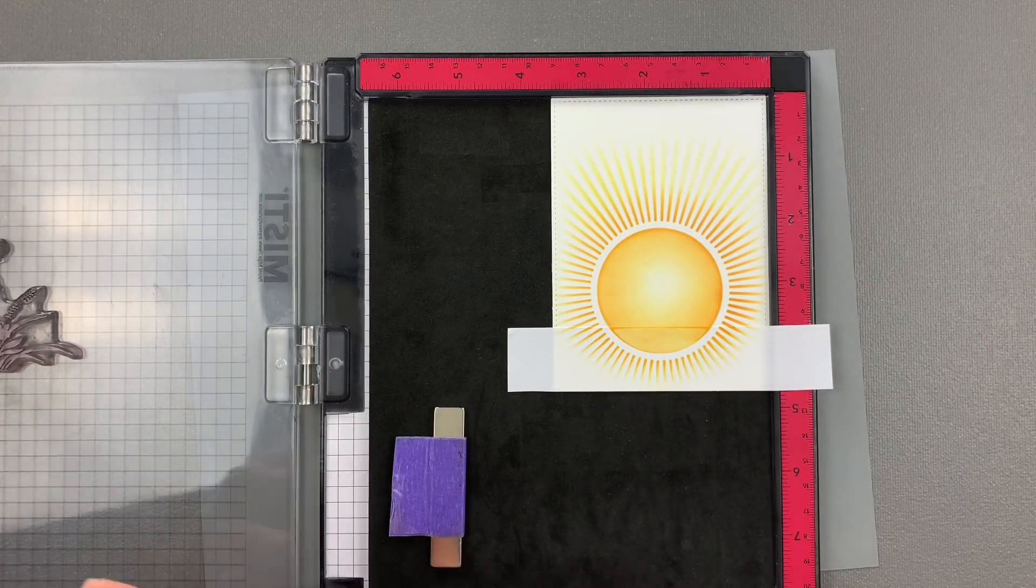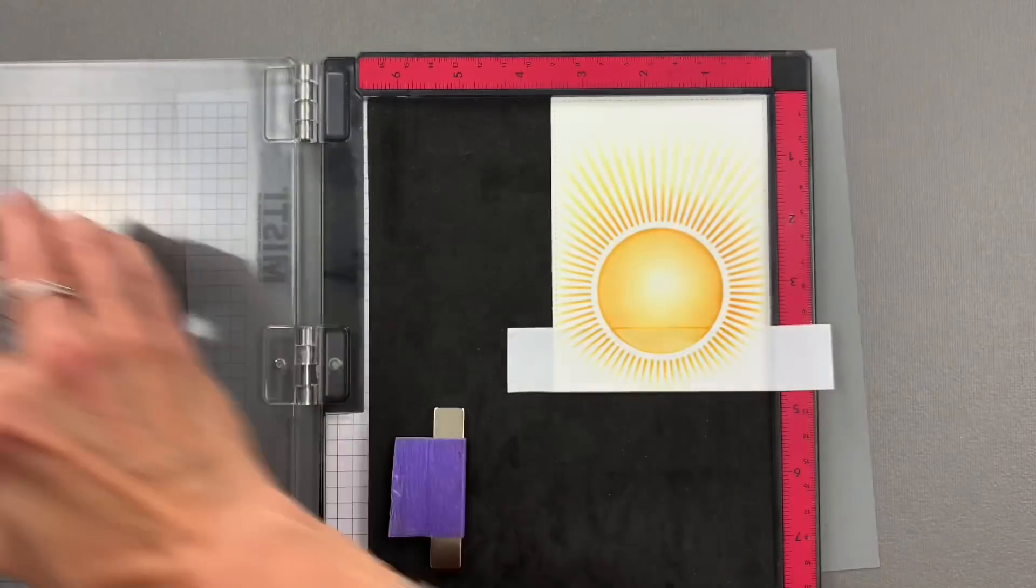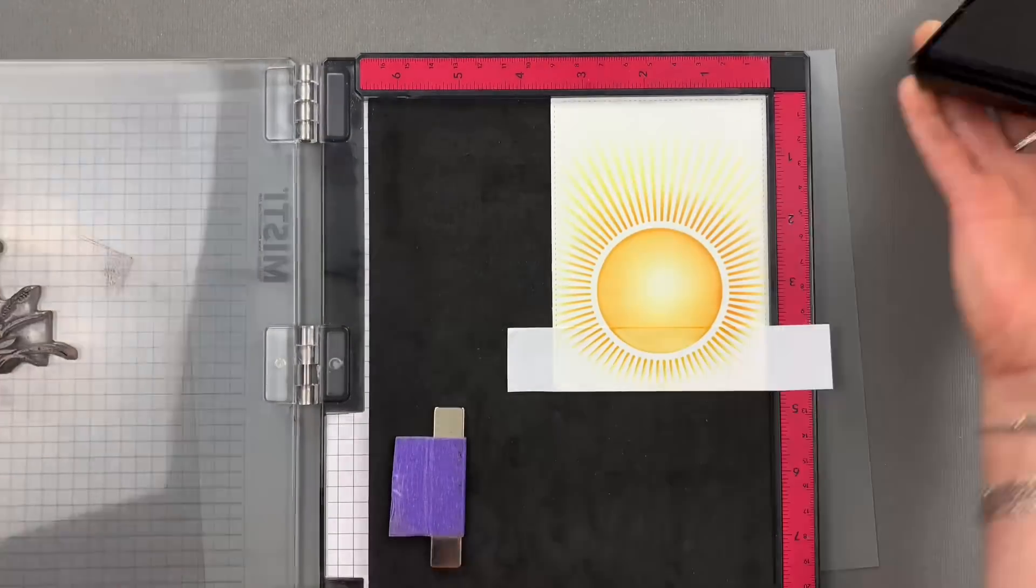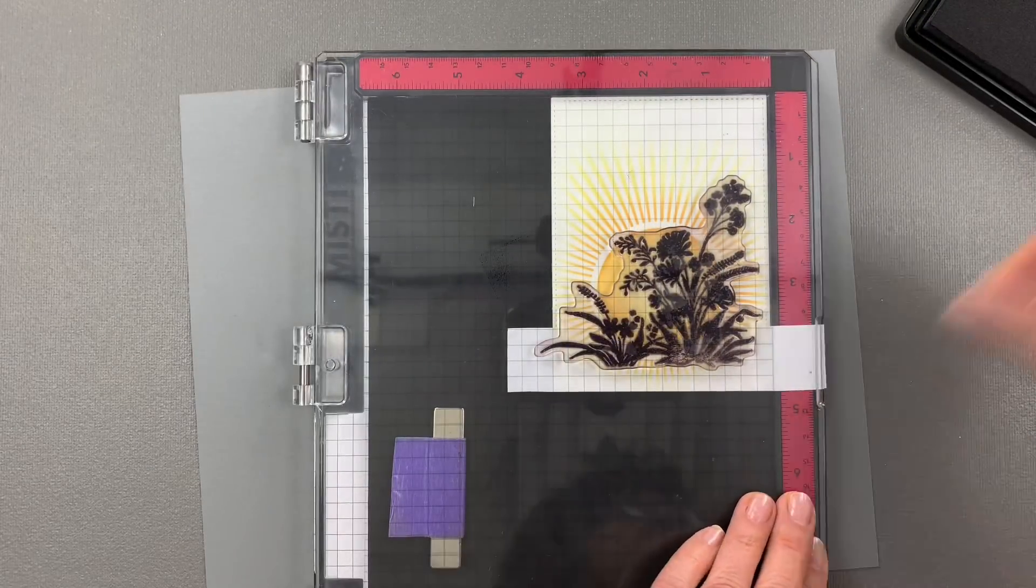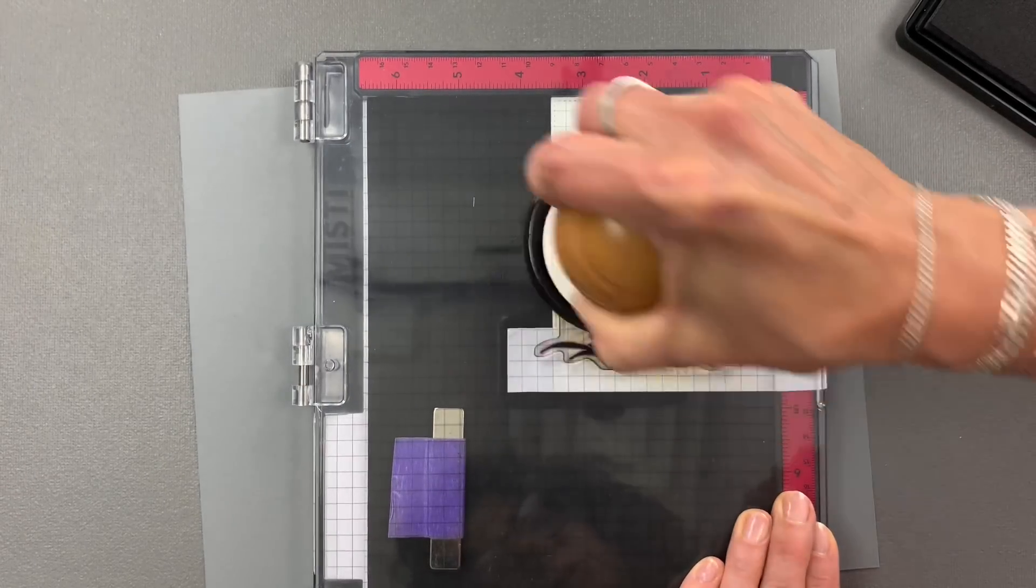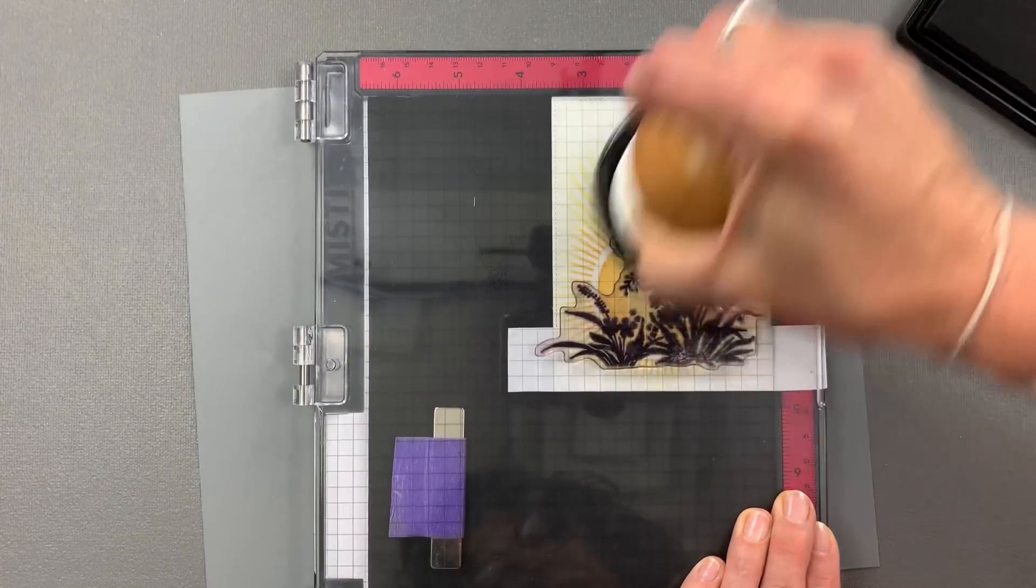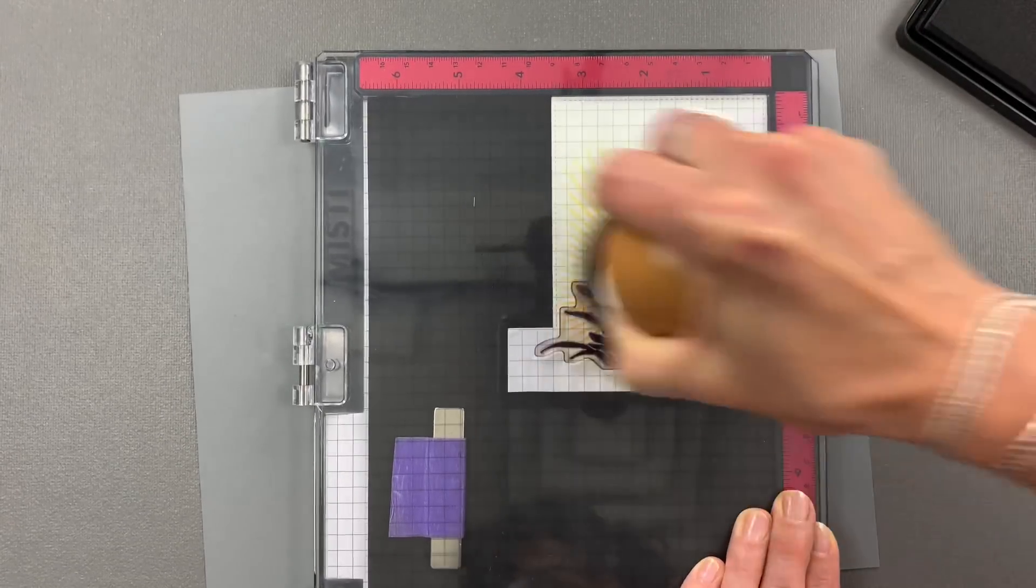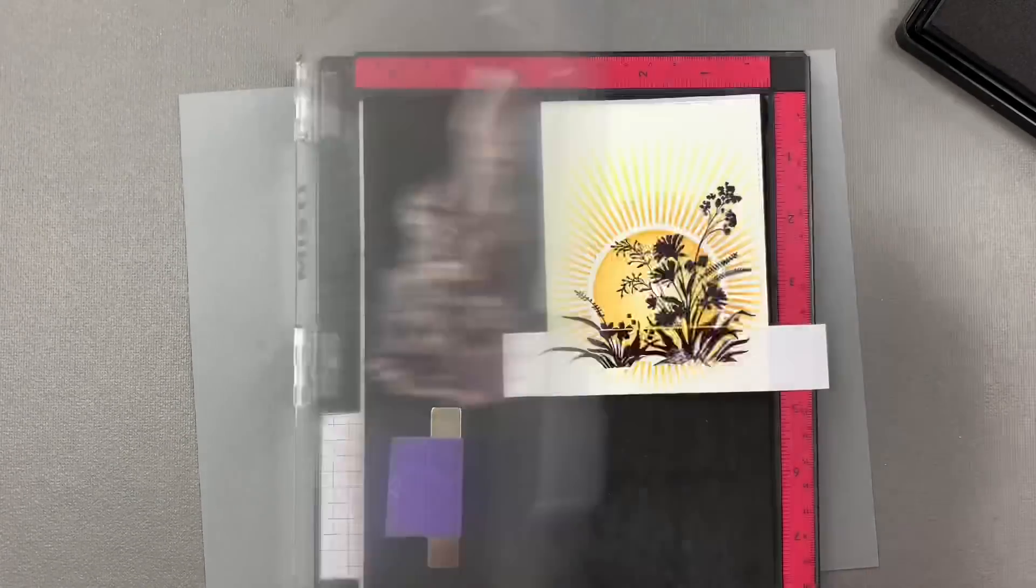I'm going to ink it up with some Black Onyx ink. I'm going to use my Chucky tool to make sure that I get good pressure, especially along the line of the Masking Magic. That should look pretty good.